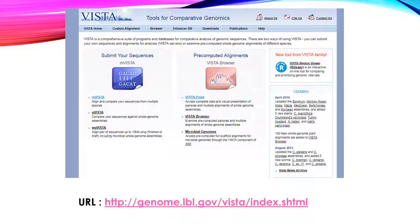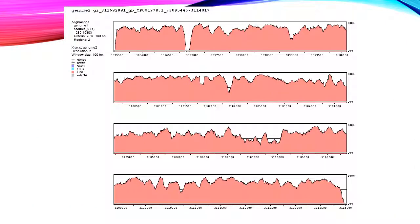Finally, we have Vista. Vista is another browser which can be used for comparative genomics as well as to identify ORFs. A Vista plot gives a graphical representation of the genome as indicated in this figure, where you can see the beginning and the end of each gene.